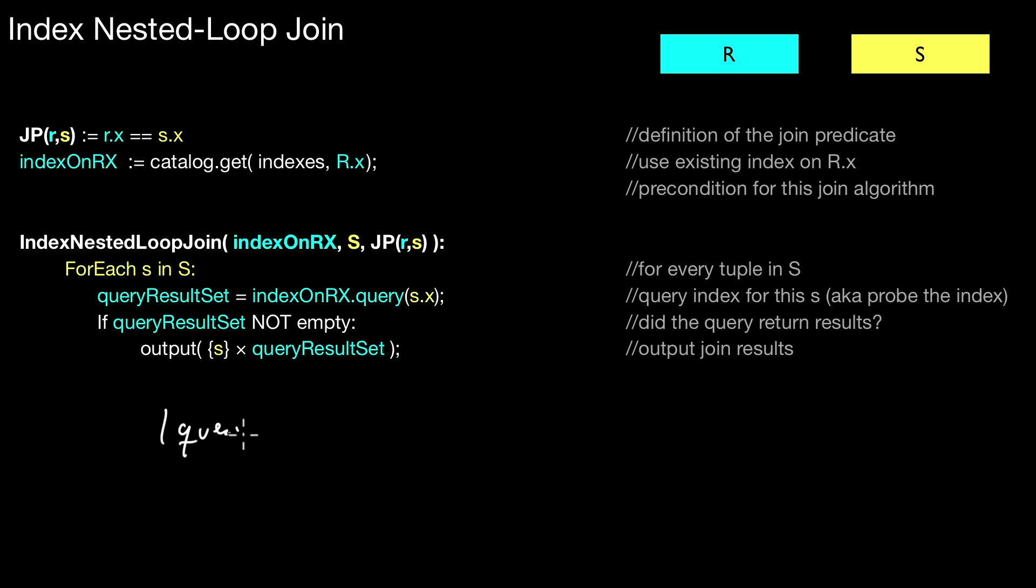So whatever the size of this result set, the size of the partial output that is generated is equal to that. So again, we use this notation. Let's say the size of the query result set, let's say, is whatever, 7. Then, of course, the cross product of this with this tuple is again 7. This partial result.